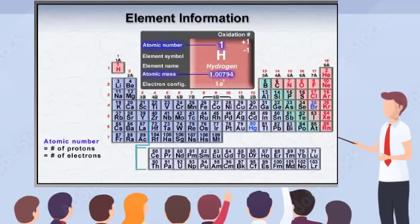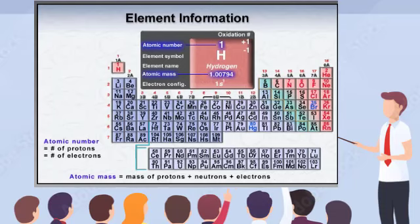Earlier, you learned that the atomic mass represents the weight of an atom, including the protons, neutrons, and electrons. However, the weight of an electron is negligible compared to that of protons and neutrons. In fact, it would take 1836 electrons to equal the mass of a single proton. So the atomic mass can be considered the combined weight of protons and neutrons in an atom.